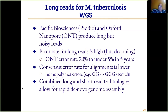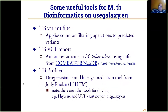If you have both long and short read technologies, they allow for rapid de novo genome assembly and thereby investigating clusters with very high resolution, enabling you to build outbreak clusters. Some bioinformatics tools described in the Galaxy tutorial — tb_variant_filter — allow you to apply common filtering operations to predicted variants, so you don't need to manually look up PE/PPE regions; tb_variant_filter applies those filters for you.